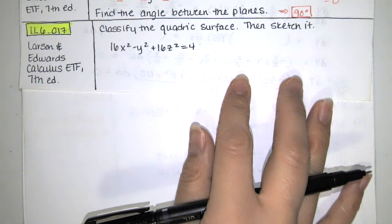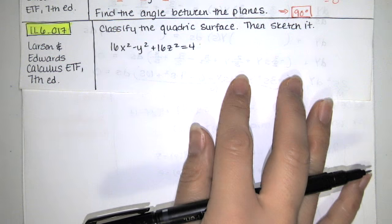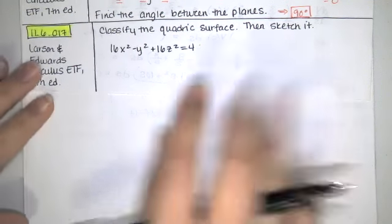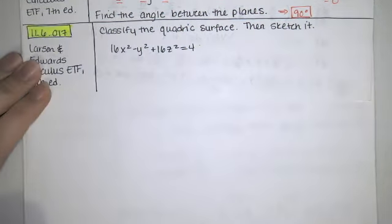First of all, when I look at this equation of a quadric surface, I notice that x, y, and z are all squared, and that one of the terms is negative, and that I also have a constant term.